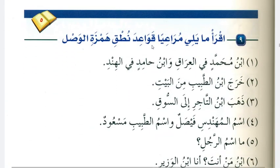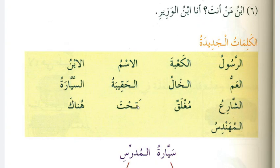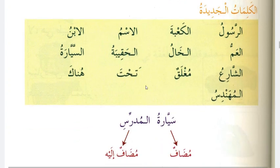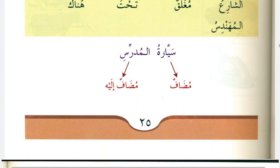اقرأ ما يلي مراعياً قواعد نطق همزة الوصل — Read the following keeping in mind the rules of pronunciation of همزة الوصل. Same rule: the first Alif is pronounced, the rest are silent. ابنُ محمدٍ في العراقِ وابنُ حامدٍ في الهندِ. خرجَ ابنُ الطبيبِ من البيتِ. ذهبَ ابنُ التاجرِ للسوقِ. اسمُ المهندسِ فيصلٌ واسمُ الطبيبِ مسعودٌ. These new vocabulary words are also your homework — you need to write their meanings.